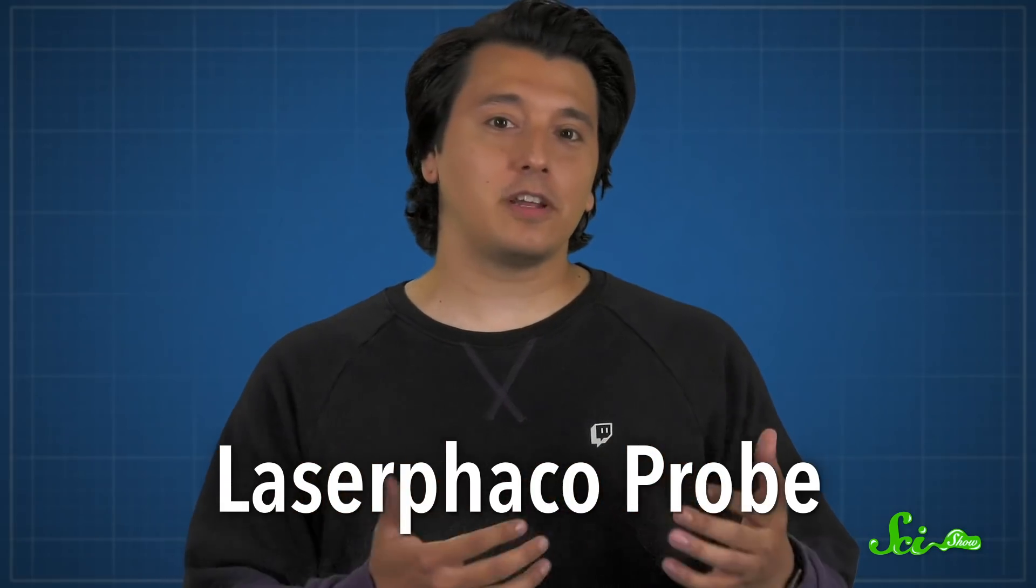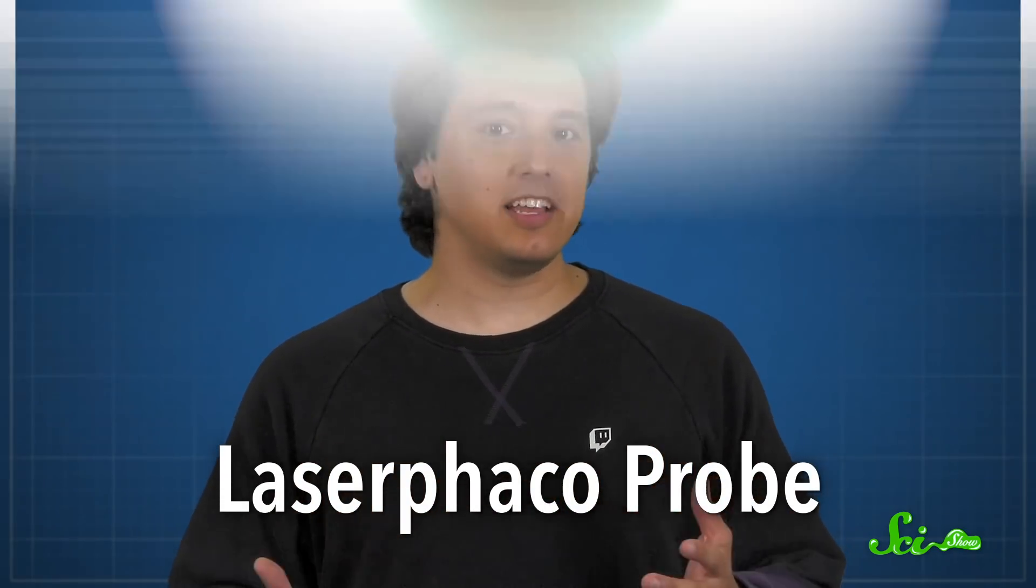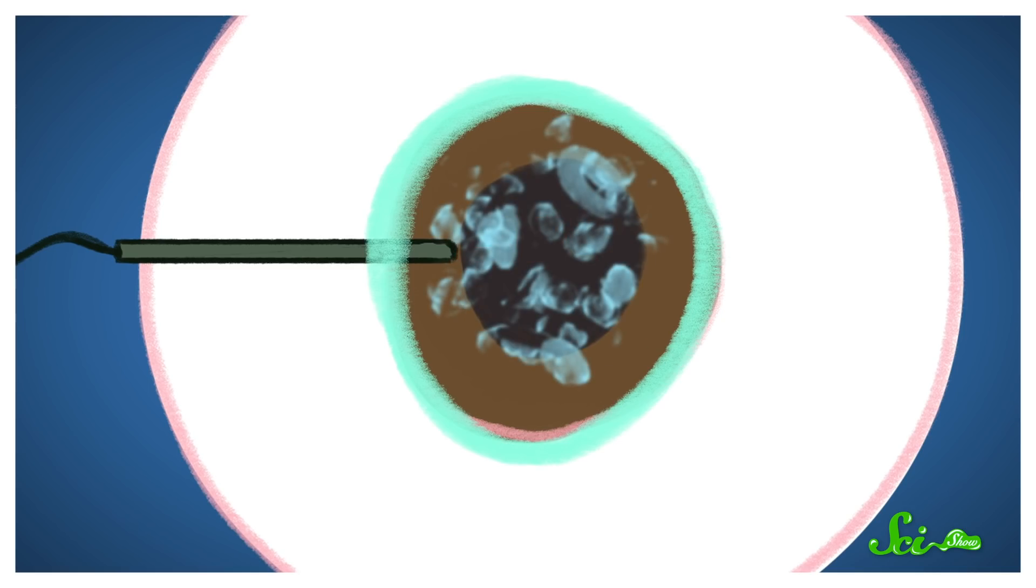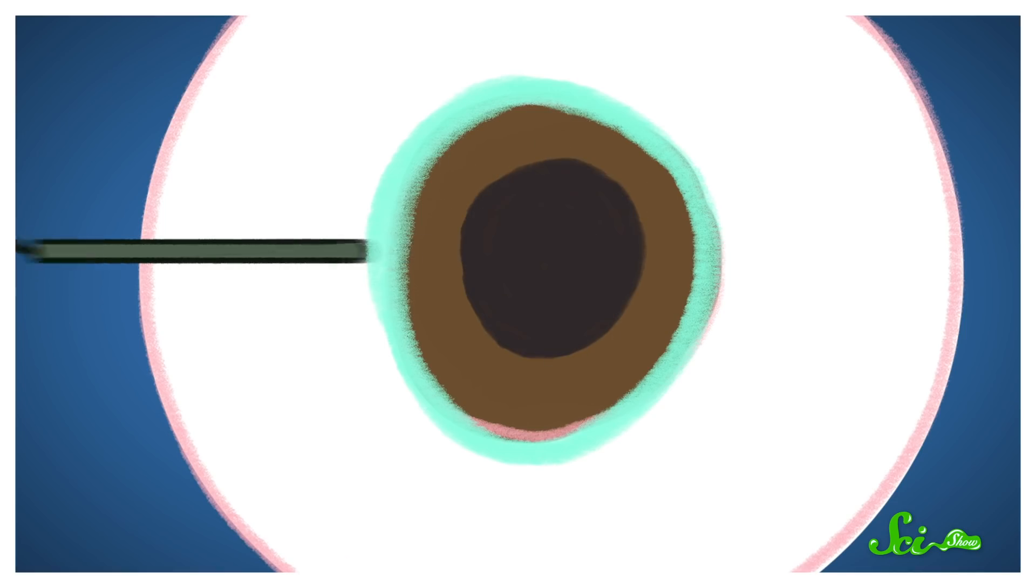The Laser Phacoprobe became an extremely safe and effective tool for breaking up cataracts in the lens. The method involves pushing a small needle embedded with a fiber-optic cable and a tiny vacuum through the side of the eye. Then, surgeons shoot an excimer laser through the cable directly onto the lens to break it up before sucking it out with the vacuum. Finally, they insert a new artificial lens made of durable, clear plastic.